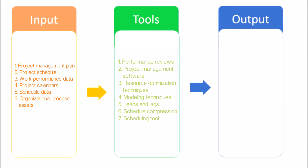Resource Optimization Techniques: Resource optimization techniques involve the scheduling of activities and the resources required by those activities while taking into consideration both the resource availability and the project time. Modeling Techniques: Modeling Techniques are used to review various scenarios guided by risk monitoring to bring the schedule model into alignment with the project management plan and approved baseline. Leads and Lags: Adjusting leads and lags is applied during network analysis to find ways to bring project activities that are behind into alignment with the plan.